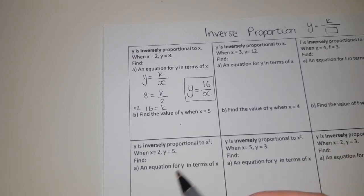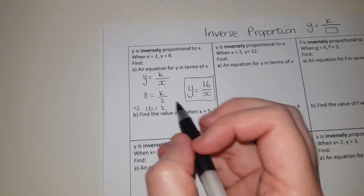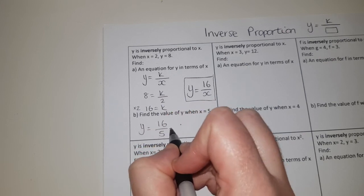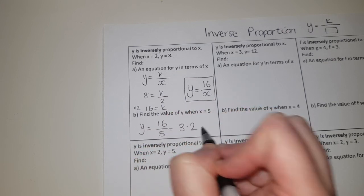Once you've found the k value that will never change, it's going to stay as 16 every time. We're just going to use it to help us find some answers. So find the value of y when x equals 5. You get y equals 16 over 5, or fifths, or 3.2, and that's it, first one done.